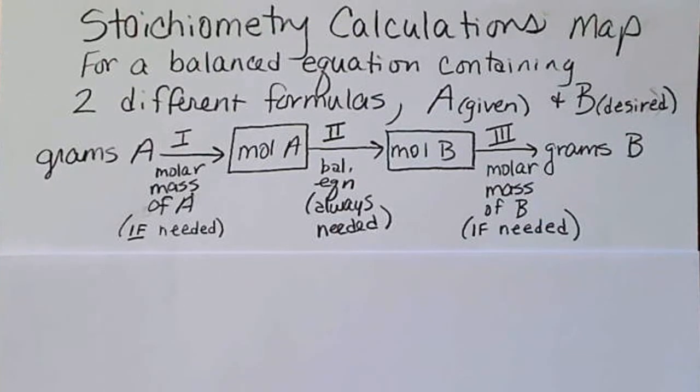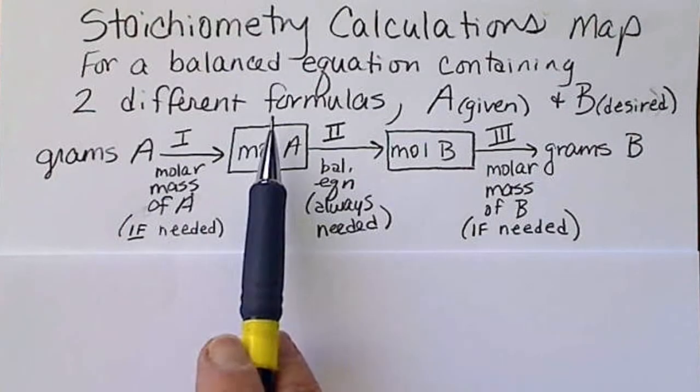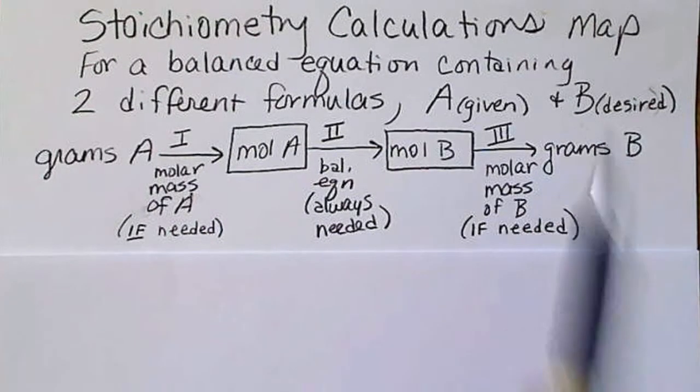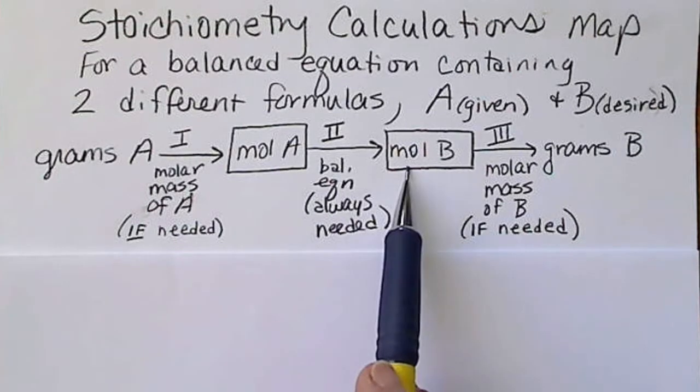When doing calculations involving a chemical reaction, we're going to have a balanced chemical equation. Recall that the chemical equation or the balanced equation is always a specific recipe, and that recipe is always in moles. So if we have a question that has two different formulas in the question, for example going from hydrogen to oxygen, we are going to always have to use the balanced equation step.